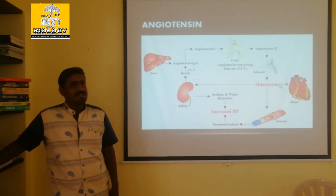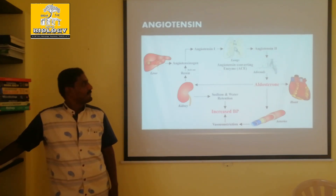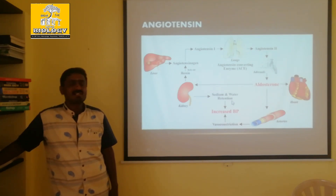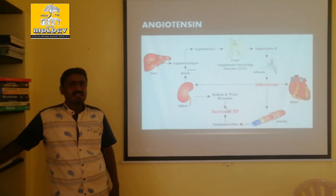Angiotensin 2 causes increased heart rate. The kidney then causes sodium and water retention. Sodium and water retained in the blood — that is why blood pressure increases. This is the mechanism by which blood pressure rises due to angiotensin.